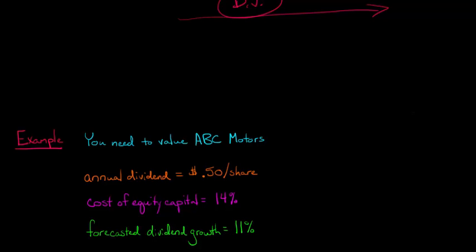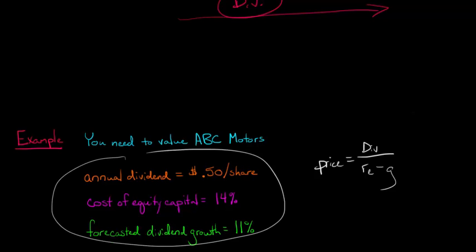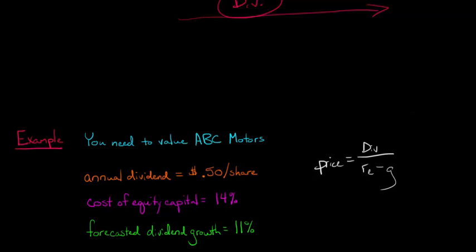One thing you can do is just use the dividend discount model. We'll say that the share price is going to be equal to the dividend, the annual dividend, over the cost of equity R sub E, minus the growth rate. Our dividend payout is going to be $0.50 a share.